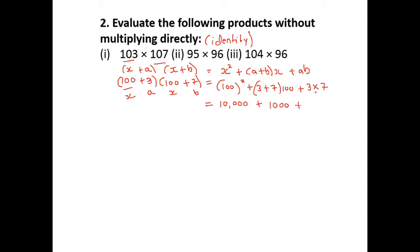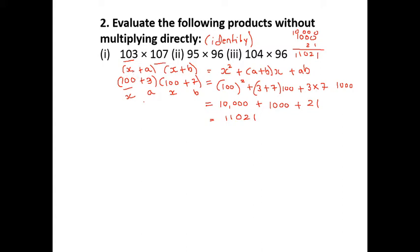So the answer is 11,021. You can check this yourself. The simple concept is to use the formula (x + a)(x + b). Someone might ask: can we write 103 × 107 another way? Yes — we can also write it as (105 − 2)(105 + 2).